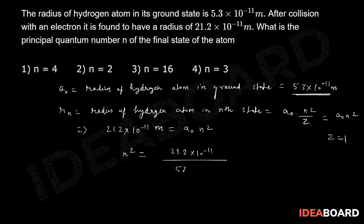a₀ is given to be 5.3 × 10⁻¹¹. If you put the value, 10⁻¹¹ cancels out. This will be 21.2 divided by 5.3. If you see closely, this will be 4.